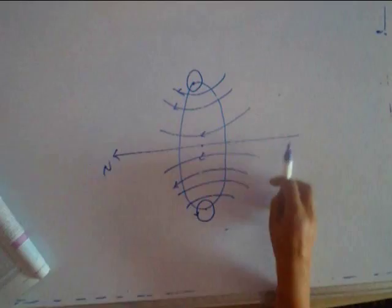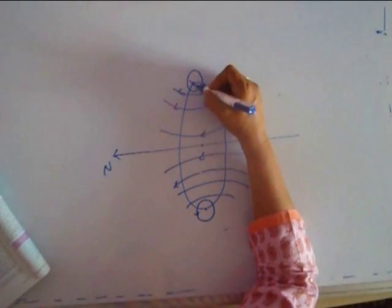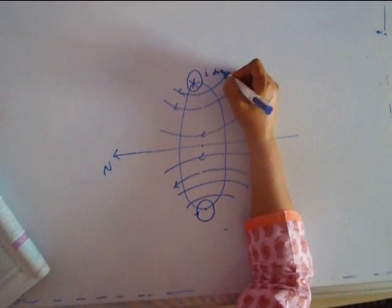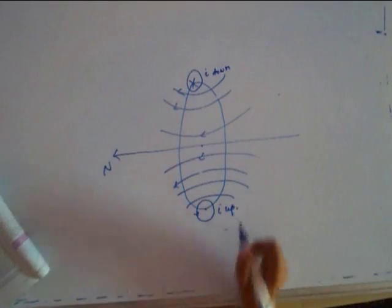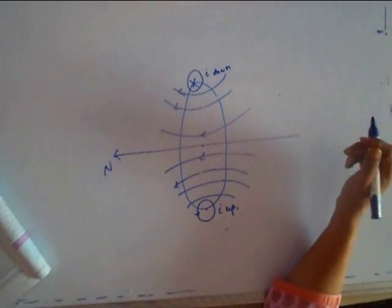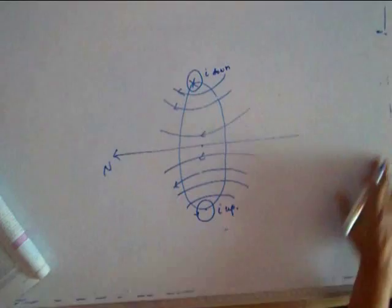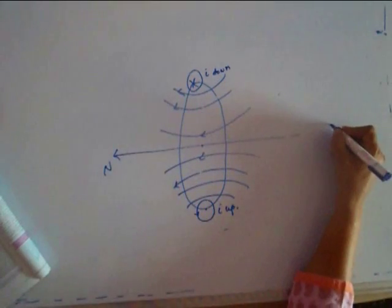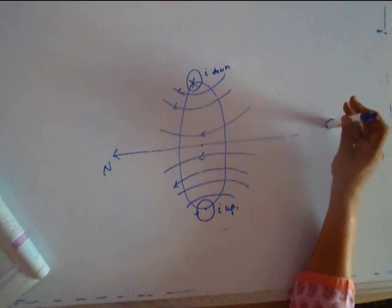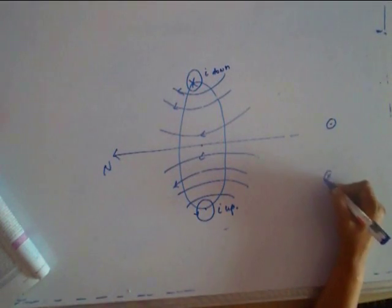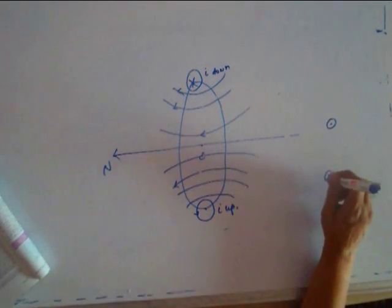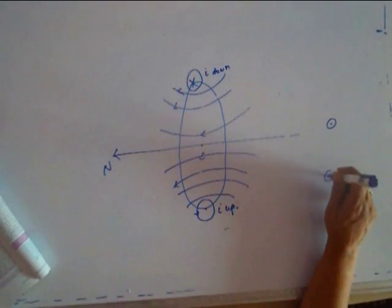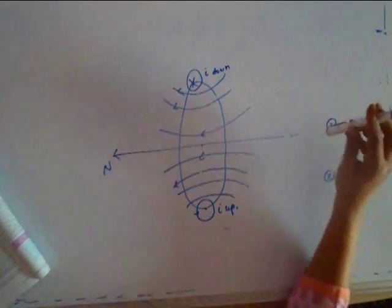It shows that the current is coming up, so here the current is coming up and here the current is going down. You can say I down, I up. There is a convention in physics which says that if something is, there is a plane here, plane of paper and you want to show something coming up, then you show it with a dot. It means something is coming up. If something is going down, then you show it with a cross, perpendicular to the plane of the paper. Here it is perpendicular to the plane of paper, here it is going in, here it is going out.